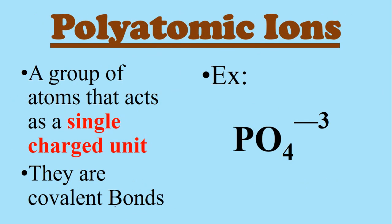When you are naming polyatomic compounds, what's going to be in there is something called a polyatomic ion, or polyatomic ions. This is a group of atoms that act as a single charged unit, and they're all covalent bonds. You can see this example here — PO4 stays together and acts as one, and it has a negative three charge. That's its oxidation number, and that's going to come into factor when we start writing formulas.